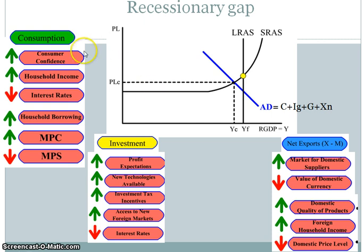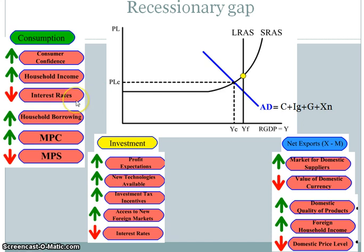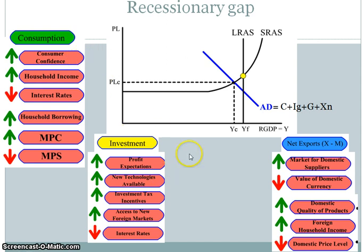Looking at the different categories, you have consumption, investment, and net exports, and government spending would obviously be an increase. For consumption, some key things to think about would be interest rates — if they decrease, that allows consumers to take out more loans and buy more things. The MPC and MPS go together: if one is going up, people are consuming more, meaning they're saving less. Consumer confidence is also important — psychology is huge in economics, and you can see the impact there.